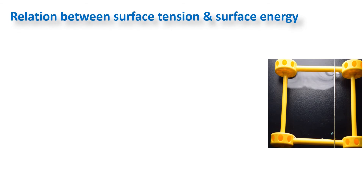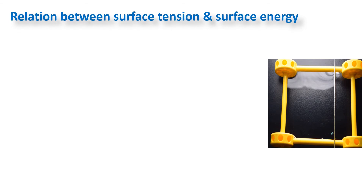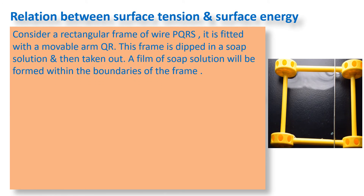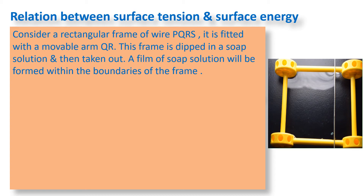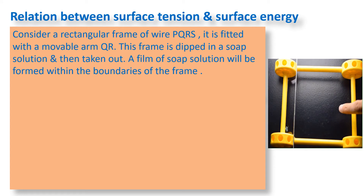To find the relation between surface tension and surface energy, we consider a rectangular wire frame PQRS fitted with a movable arm QR — the other three arms are fixed but QR can move inward or outward. When this frame is dipped into soap solution and taken out, a soap film forms within the boundaries of the frame. If you break part of the soap film, the movable arm QR moves inward due to the force of surface tension acting tangentially.